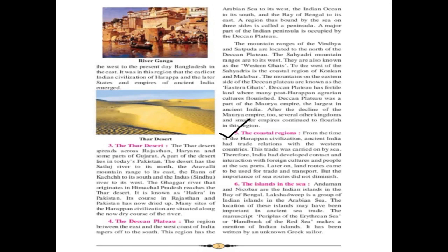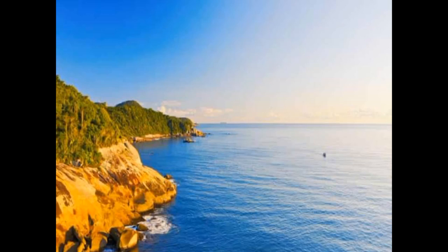The Coastal Regions. From the time of the Harappan civilization, ancient India had trade relations with western countries, carried on by sea. India developed contact and interaction with foreign cultures at its seaports. Later, land routes also came to be used for trade and transport, but the importance of sea routes did not diminish. Coastal regions are local areas bordering or very close to the coastline, where land and water surfaces meet.